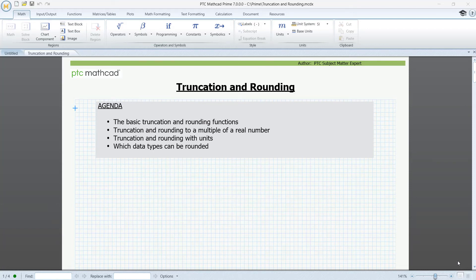Welcome to this video on truncation and rounding. MathCat can display values up to 15 decimal places. For most purposes, this is more than sufficient.